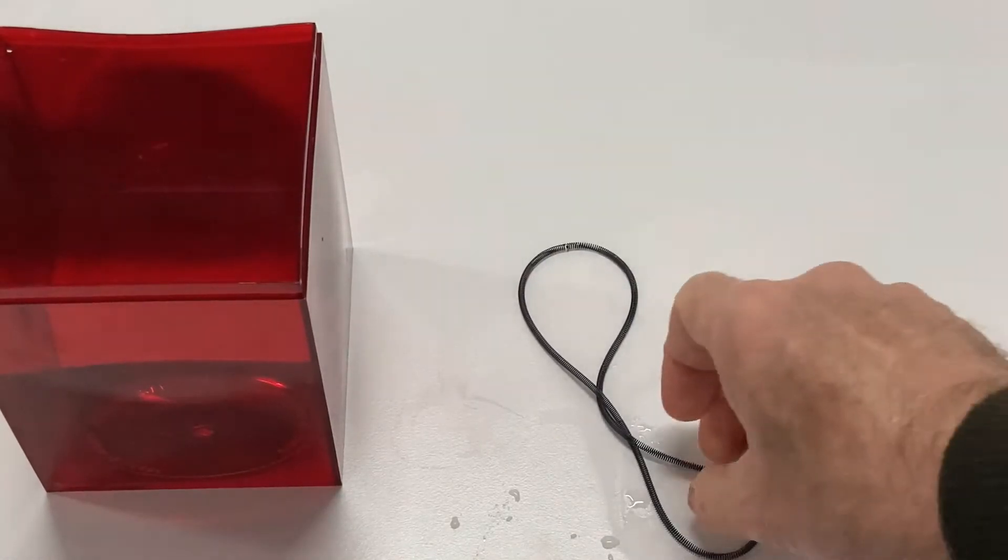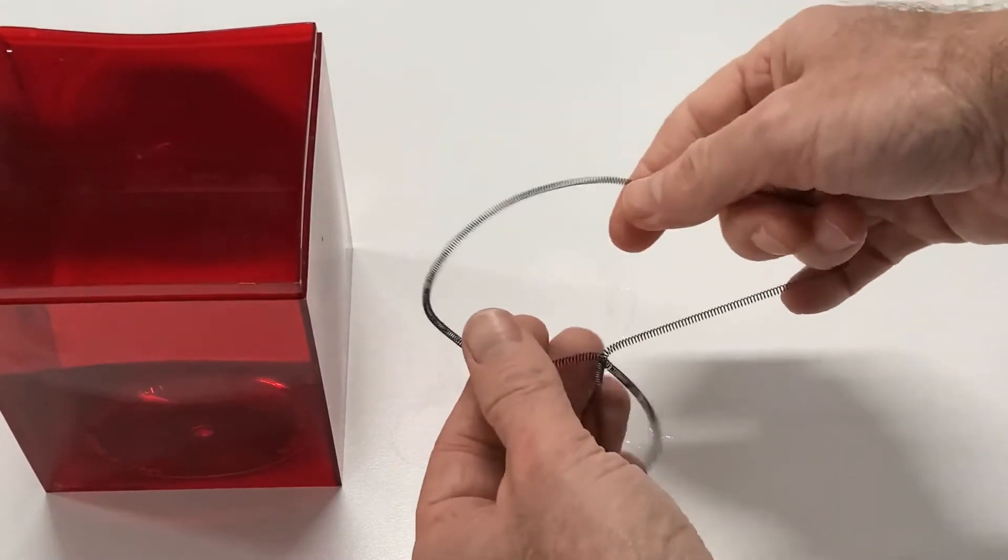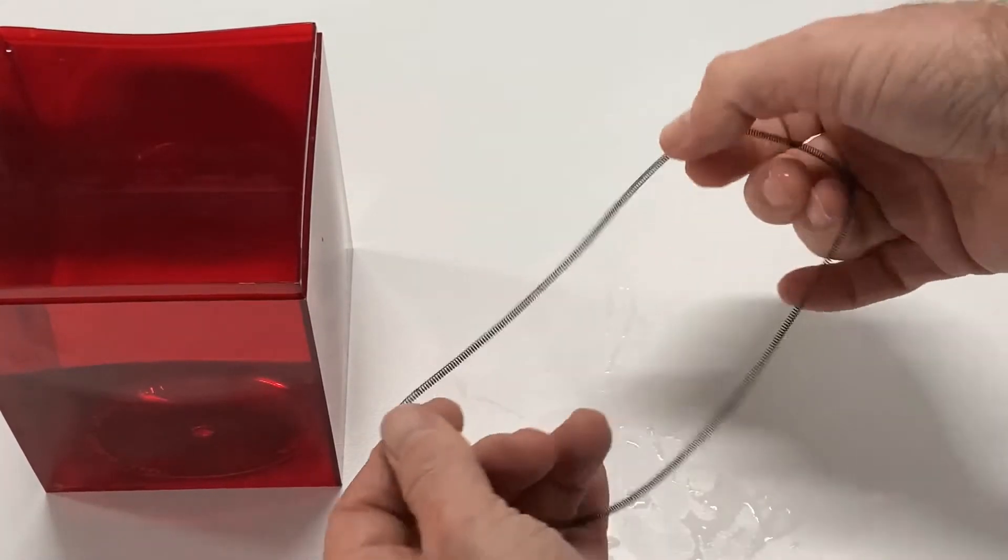The key to the engine is the shape memory alloy material. Here we have a coiled spring that is formed into a loop.